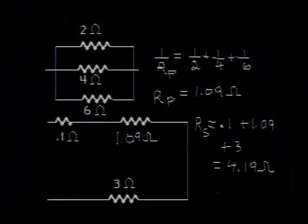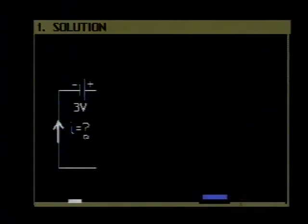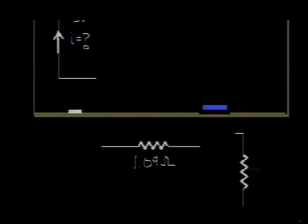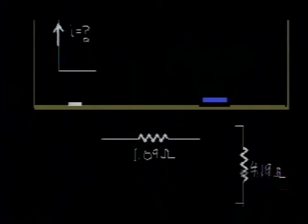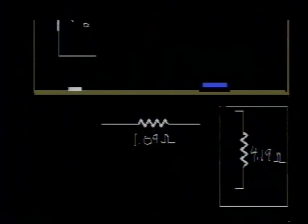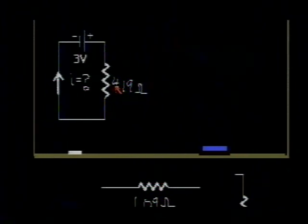This will be then the equivalent resistance of the whole circuit. Let's go back and label this 4.19 ohms. And let's cut it out and place it back up in our circuit. All right, so that's the answer to part A.